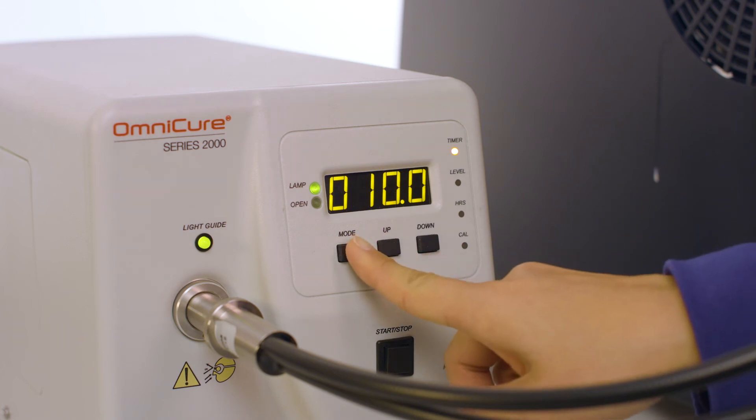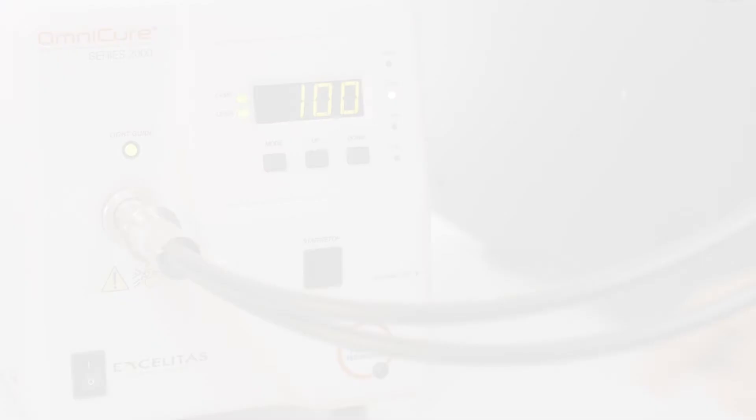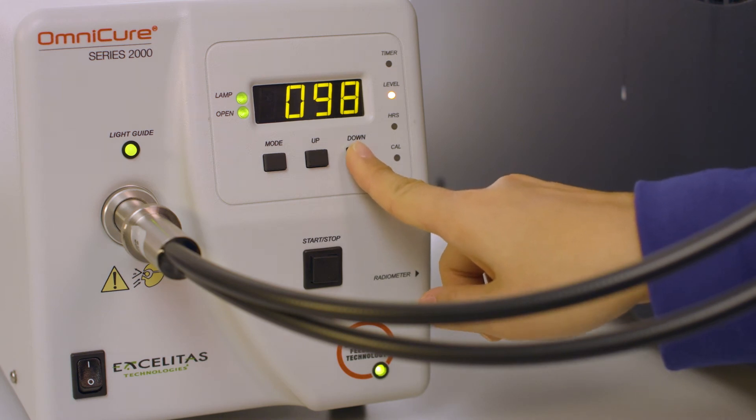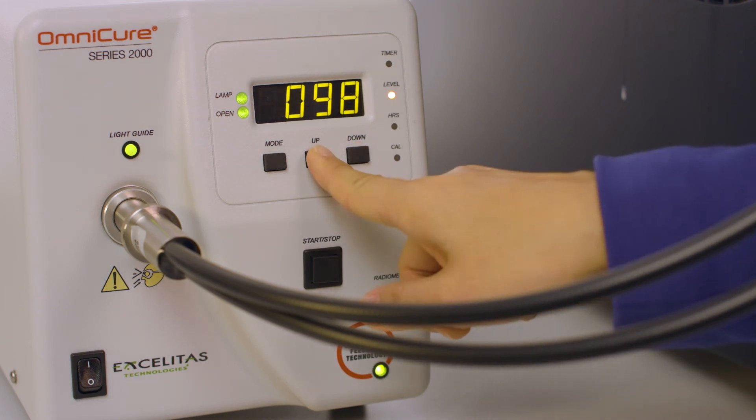In the light source, press the mode button until the level option is active. Use the up-down adjustment button to adjust the intensity reading at the sample and reference position until the desired intensity is reached.